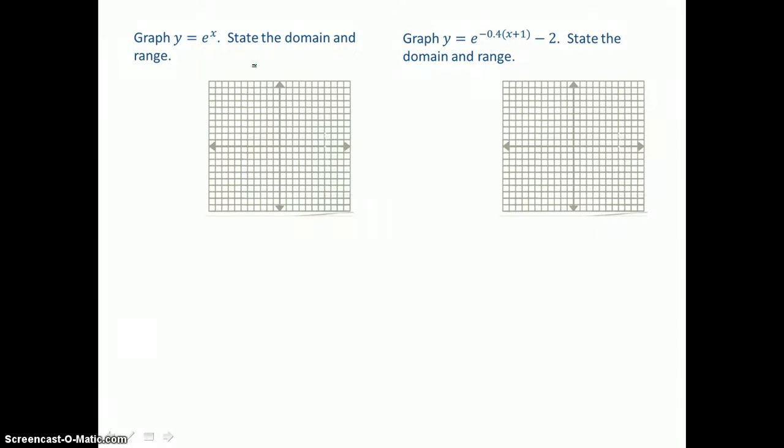Here we're going to graph equations involving that natural base e. These equations are of the form y equals ab to the x power. So these are exponential equations. This first one I know is exponential growth because the exponent is positive x. Our second equation I recognize as exponential decay because the exponent is negative, negative .4 times the quantity x plus 1. In this first equation, to graph it, let's make a table of values. Let's let x equal negative 1,